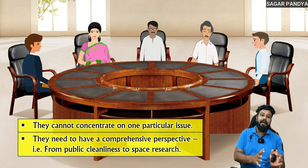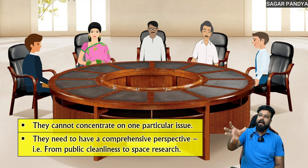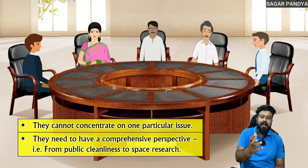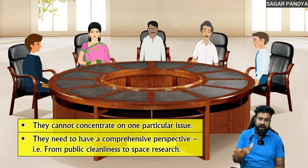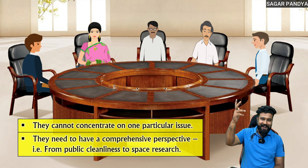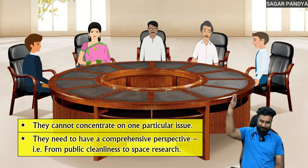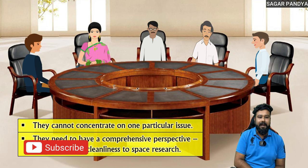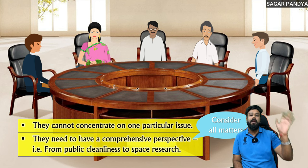That is, from public cleanliness to space research. As basic as whether there is cleanliness in your area or not — if there is dirtiness, filthiness, then that has to be cleared, safai rakhni hai. Like Swachh Bharat Abhiyan. And up to space research, like Chandrayaan 3. So political parties discuss all of this — comprehensive means considering all the matters.